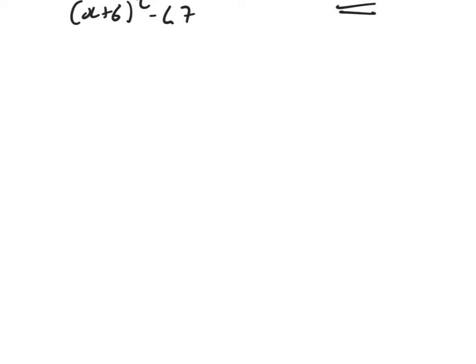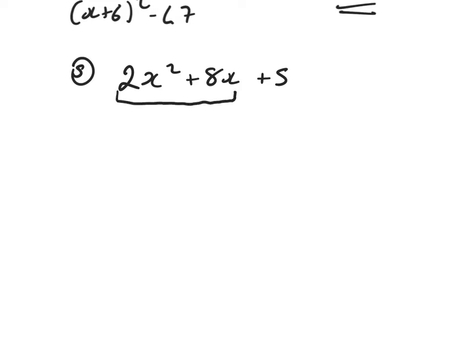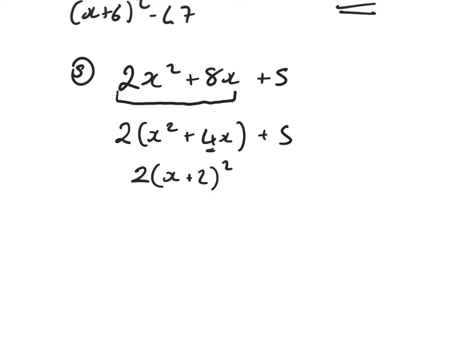Now it becomes higher content when there's a coefficient above 1 in front of the x squared. So this one we've got 2x squared plus 8x plus 5. Our routine is to first take out a numerical common factor only from the first two terms only, and then I've still got the plus 5 at the end. Half the 4 down to a 2, create a squared bracket. But remember there's a 2 at the front, so 2 squared is 4, times that by 2 is 8 — get rid of 8 and add on 5. So that's 2 bracket x plus 2 all squared minus 3.